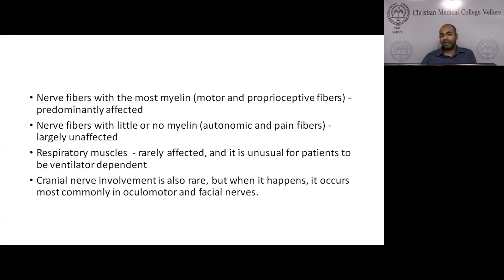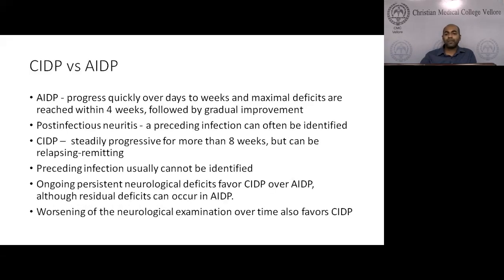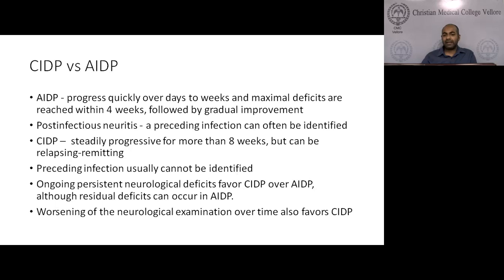Respiratory muscles are rarely affected and it's unusual for patients to be ventilator dependent. Cranial involvement is also rare, but when it happens it most commonly occurs in the oculomotor and facial nerves. Differentiating CIDP from AIDP: AIDP progresses quickly over days to weeks with maximal deficits reached mostly within four weeks, followed by gradual improvement, and is often post-infectious. CIDP is steadily progressive for more than eight weeks, can be remitting-relapsing, and preceding infections usually cannot be identified.